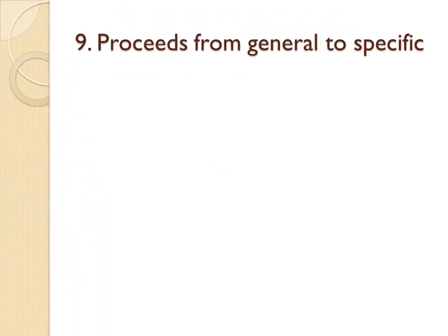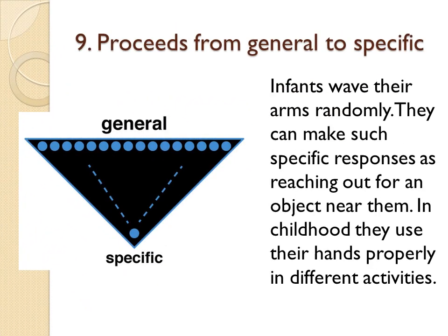The ninth principle is that growth and development proceed from general to specific. In all areas of development, general activities always precede specific activity. For example, infants wave their arms randomly, but they can make such specific responses as reaching out for an object near them. In childhood, he uses his arms properly for dancing.